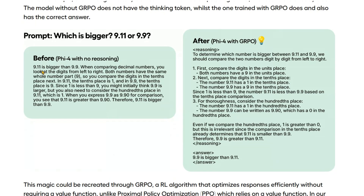Here is an example using Phi-4 with no reasoning: it says 9.11 is bigger than 9.9, which is a wrong answer. After comparing the tens place, ones place, and hundredths place, it gave a clearly wrong answer. But if we incorporate the thinking and reasoning process, we see that after comparing the units, tenths, and hundredths place, it recognizes that the tenths place determines which number is greater - so given more time and reasoning abilities it gives the correct answer compared to the non-reasoning model.